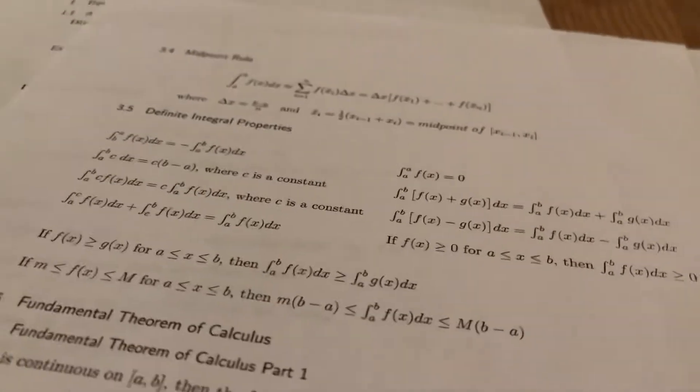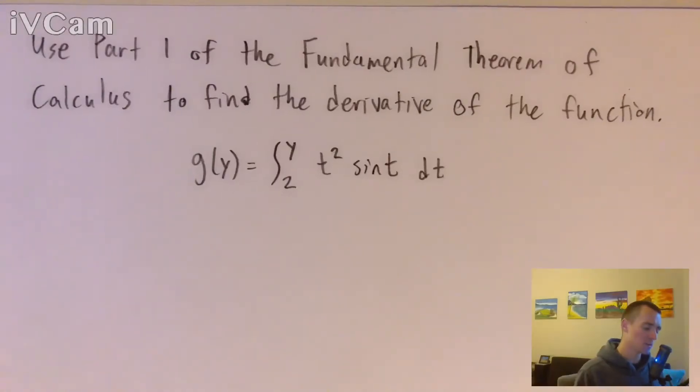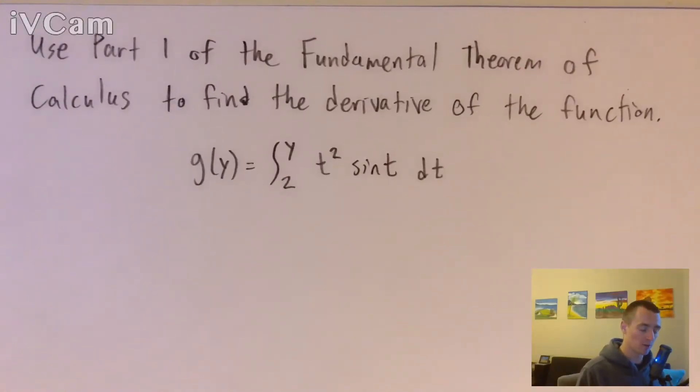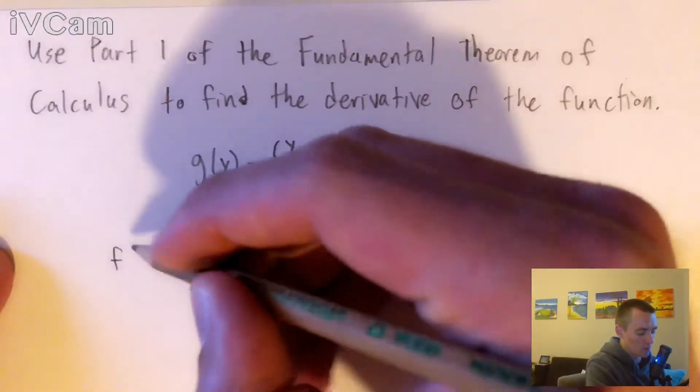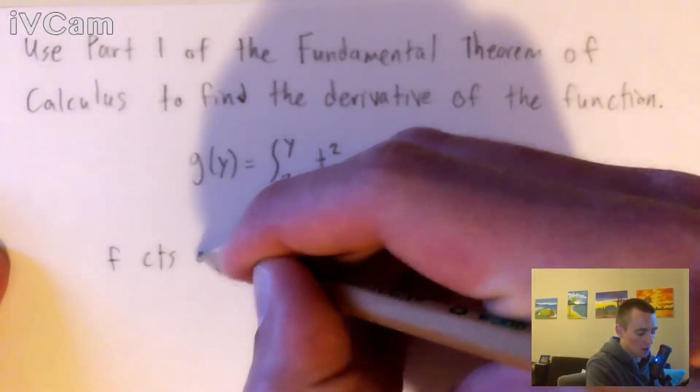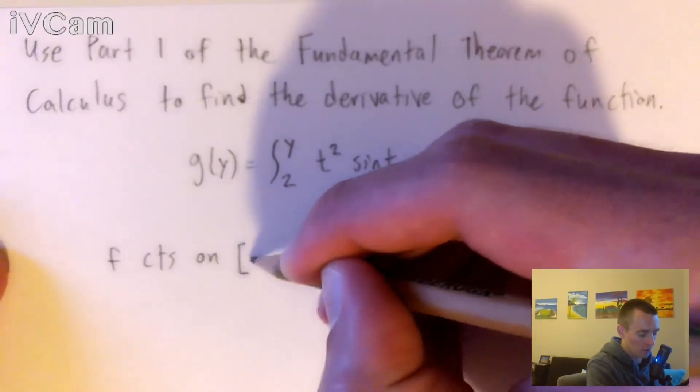But this one is obviously going to be about the fundamental theorem of calculus part one, which is one of the formulas on that study guide. So basically what part one of the fundamental theorem of calculus tells us is that if we have some function which is continuous on the interval from a to b,